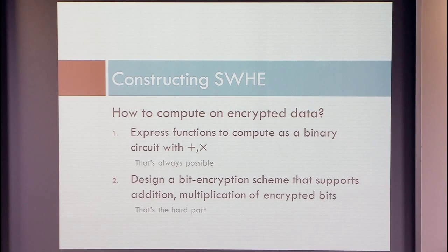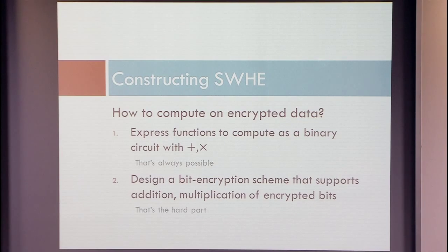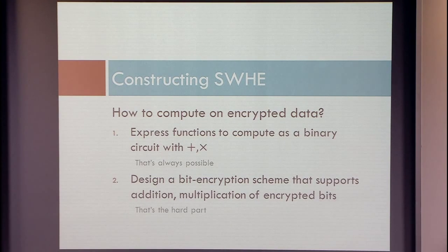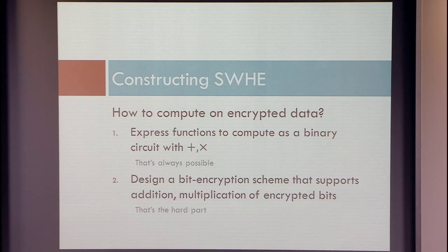With that, let's talk about how to construct homomorphic encryption. There are essentially two easy steps. First, express your function as a circuit with addition and multiplication gates. Then design a cryptosystem that encrypts bits and can support addition and multiplication. The second step is of course where the hard part is — the first one is generic.